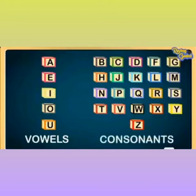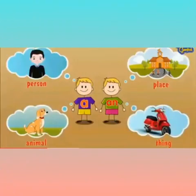There are 5 vowels. How many vowels are there? Yes, 5 vowels. The rest of them are consonants. There are 21 consonants. They are B, C, D, F, G, H, J, K, L, M, N, P, Q, R, S, T, V, W, X, Y, and Z. We use A and AN before the naming words, such as one person, place, animals, or things. For example, an orange, a girl.